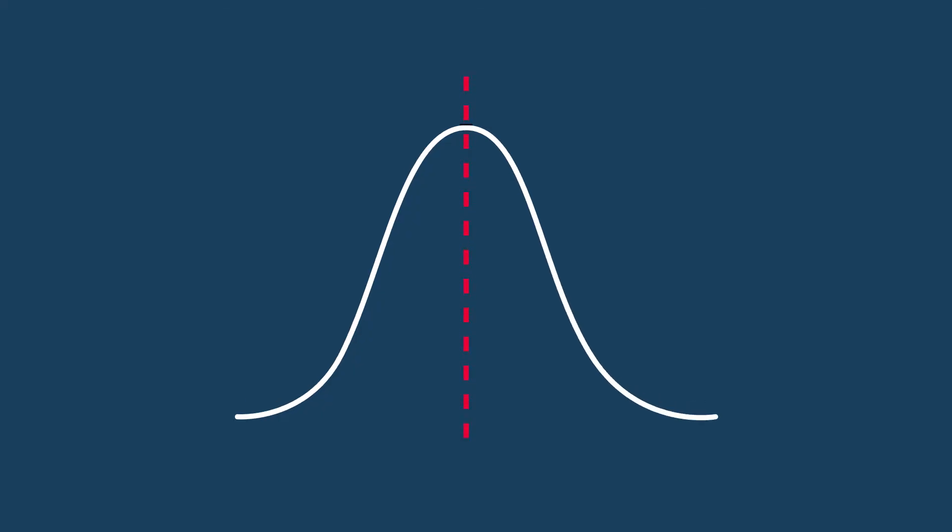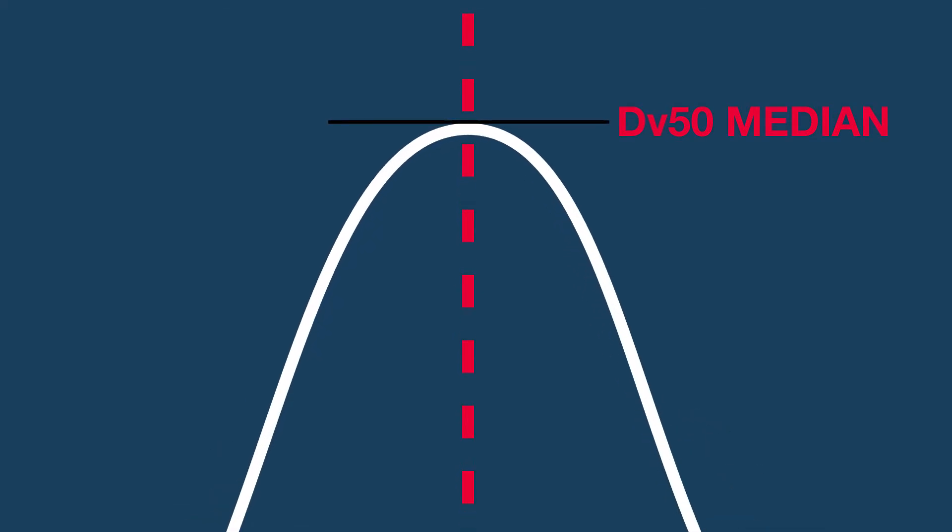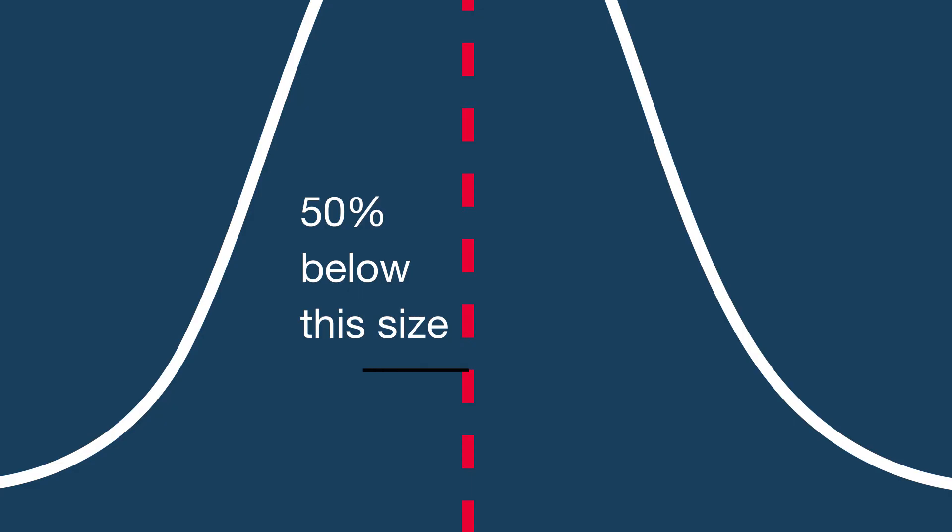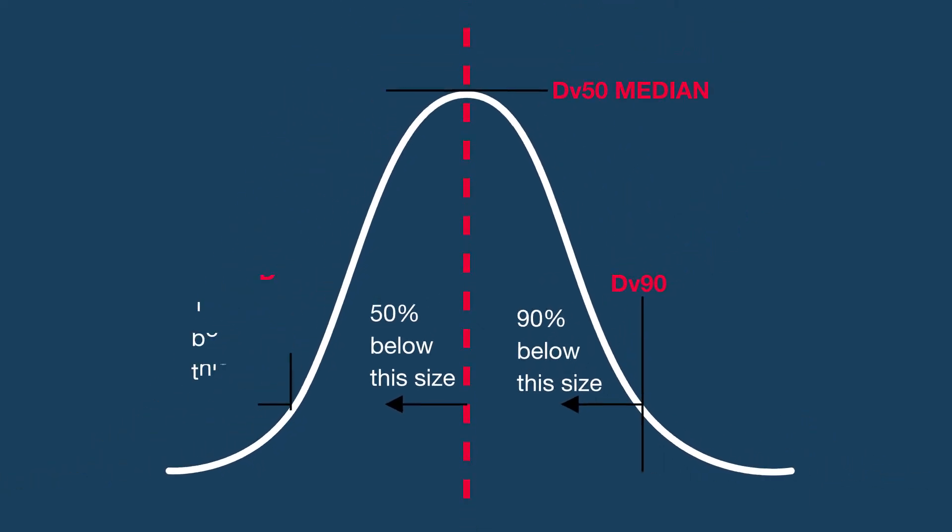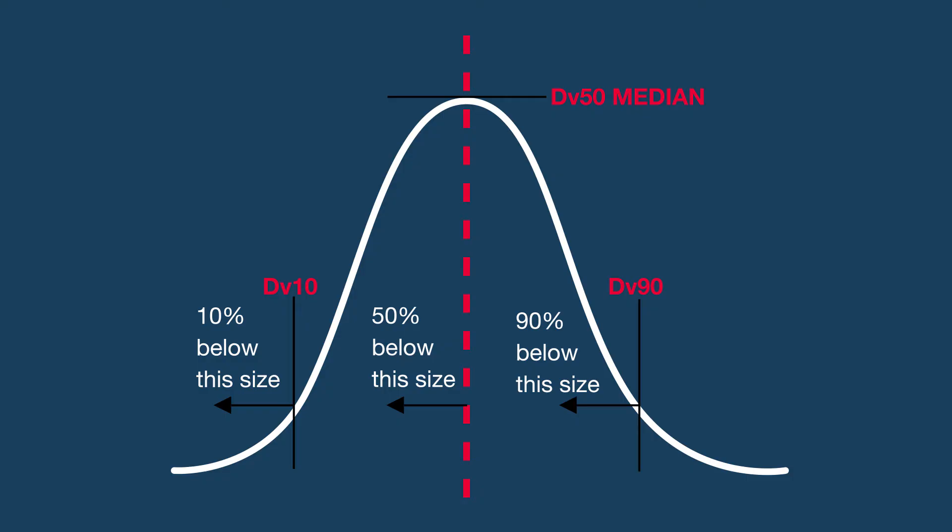Particle size is typically expressed as DV50, meaning that 50% of particles by volume are below that particle size. Similarly, 90% of the distribution is below the DV90 and 10% of the distribution is below the DV10.